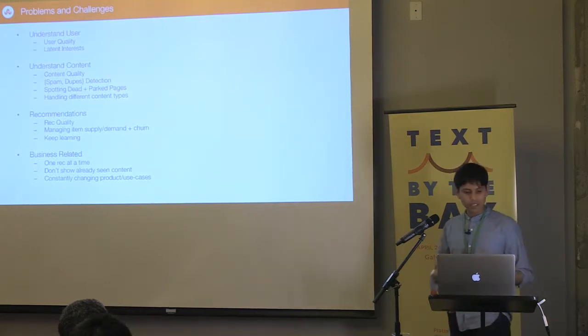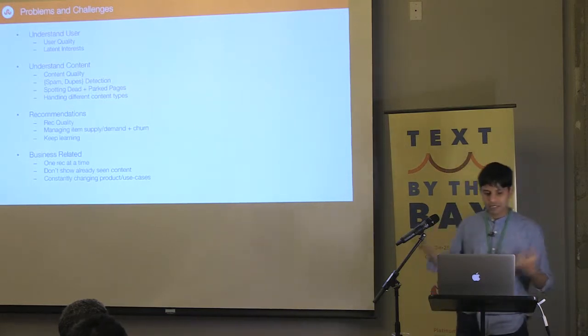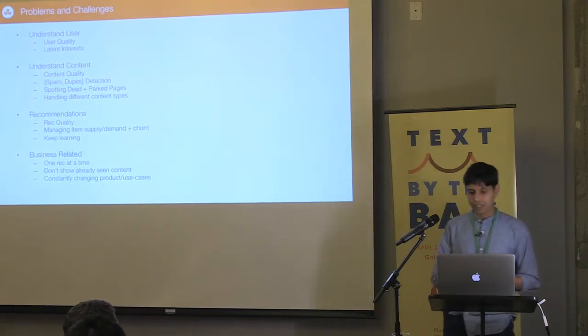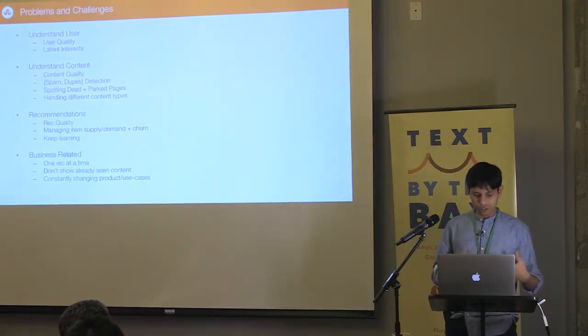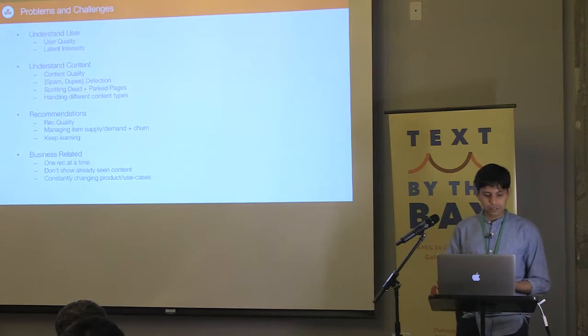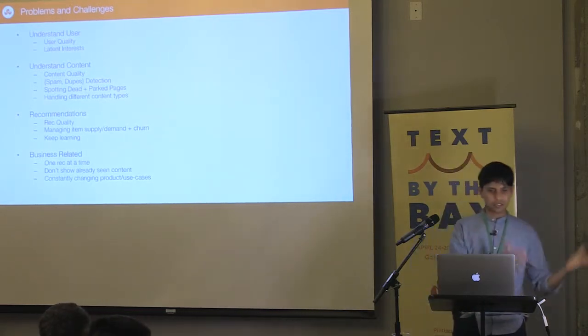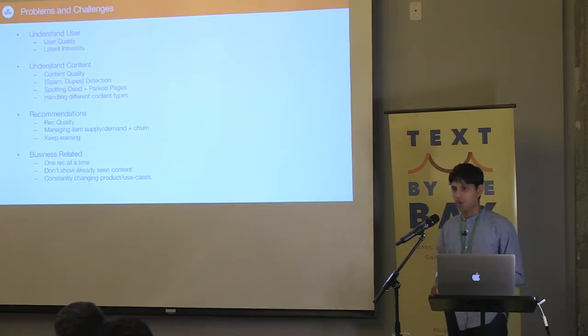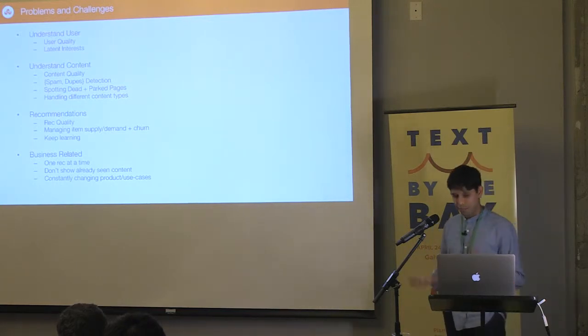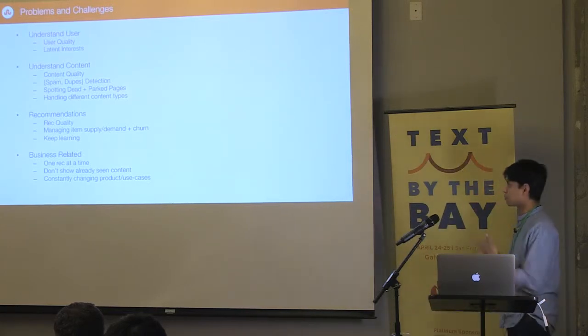Recommendations, rec quality. Rec quality is not the same as search quality, right? Search quality, you have a clear goal. Recommendations, you don't have a very clear goal. You think this is what the user is going to like and serve him something. But in the process, you are trying to balance relevance, diversity, serendipity versus familiarity, or novelty versus fatigue. So how do you characterize them all? How do you balance them all?